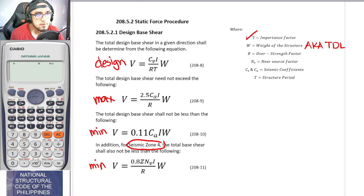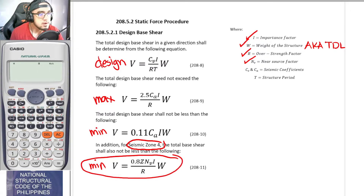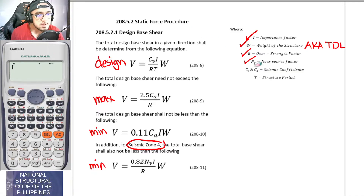So we already have the values for I, W, and R. The near source factor is needed in the CA and CV equations. Before discussing the near source factor, let us first cover the seismic coefficients CV and CA.